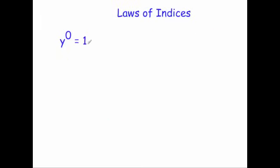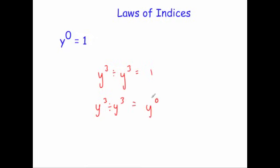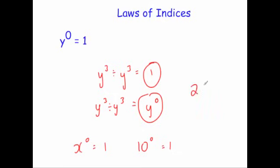This leads to an interesting result: y to the power of 0 is equal to 1 — any number to the power of 0 is always 1. Consider y cubed divided by y cubed: from basic arithmetic, dividing something by itself gives 1. But using our division law, 3 minus 3 gives y to the power of 0. So y to the power of 0 must equal 1. For instance, x to the power of 0 is 1, 10 to the power of 0 is 1, and 25 to the power of 0 is 1.